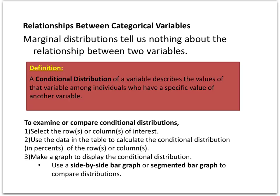Marginal distributions tell us nothing about the relationship between the two variables. In this case, we know the total percentage of each category, but we don't know what the breakdown between males and females is.